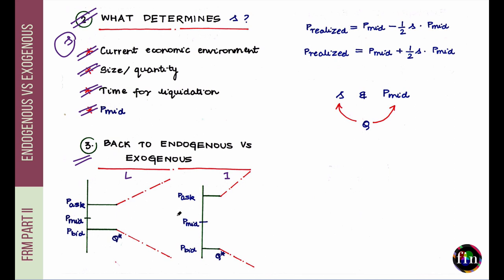Looking at the graphs: P_mid is the average of P_ask and P_bid, with P_ask higher than P_bid. When you enter the market with a trade, up until a threshold quantity Q* — referred to as normal market size — the spread between P_ask and P_bid does not depend on trade size. The market can absorb trades up to Q* before P_ask and P_bid start being affected.